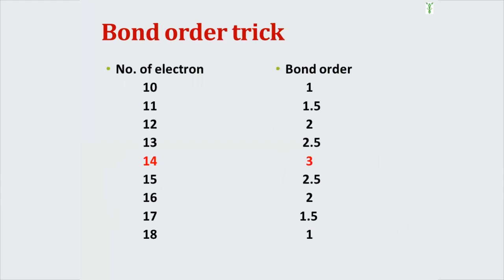Now let's see the trick to find bond order. On the left side we have number of electrons, on the right side we have bond order. You just have to remember: if the number of electrons is 14, the bond order is 3. After 14 and before 14, just decrease the bond order by 0.5. Like for 13 it is 2.5, for 12 it is 2, for 11 it is 1.5, for 10 it is 1.